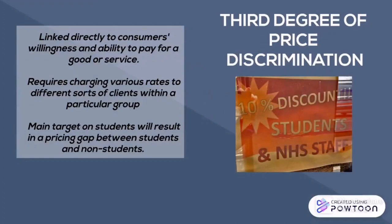Third-degree price discrimination is linked directly to consumers' willingness and ability to pay for a good or service, meaning prices charged may bear little relation to the cost of production. It requires charging various rates to different sorts of customers within particular groups. For example, when a corporation gives a student discount on a product, this is considered pricing discrimination, as students may be more price sensitive. This demonstrates how pricing discrimination leads to product discrimination for those who aren't the company's intended target.